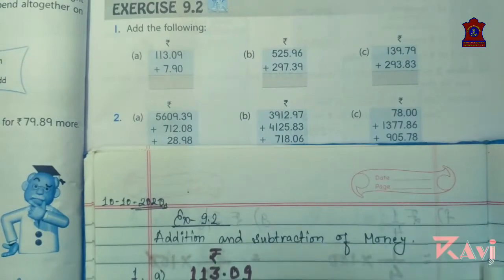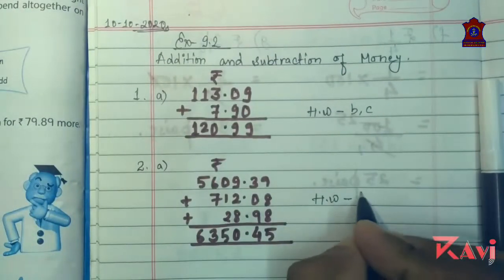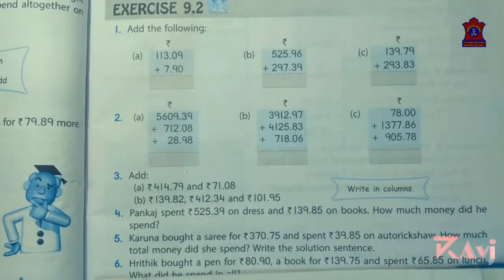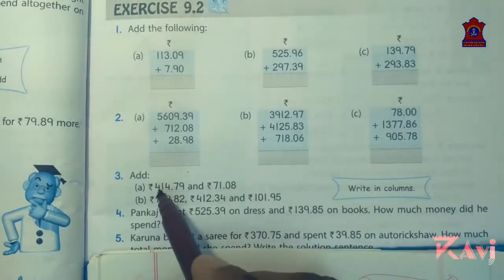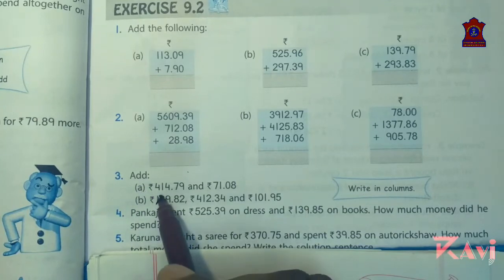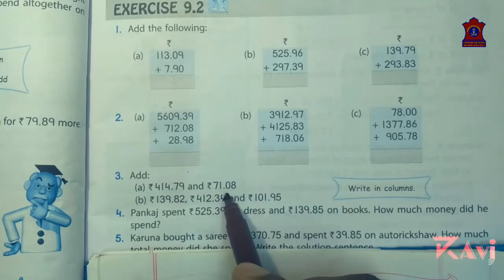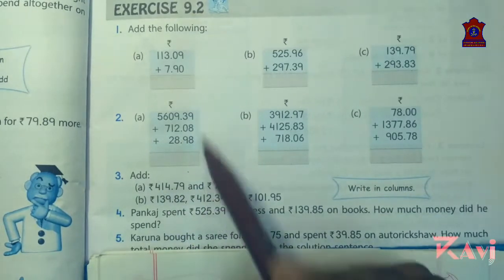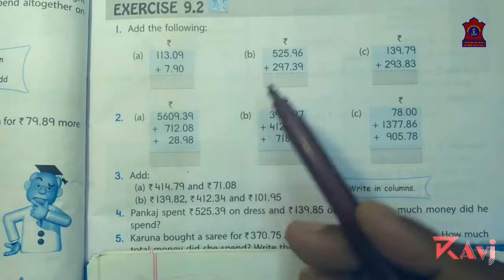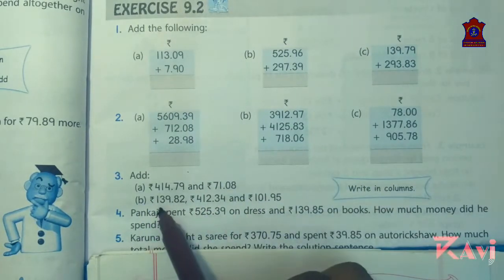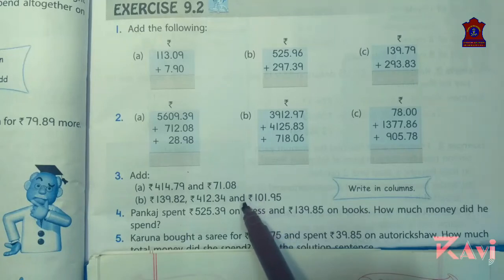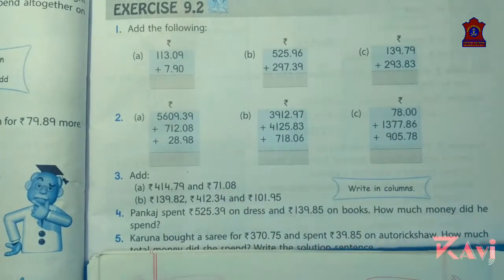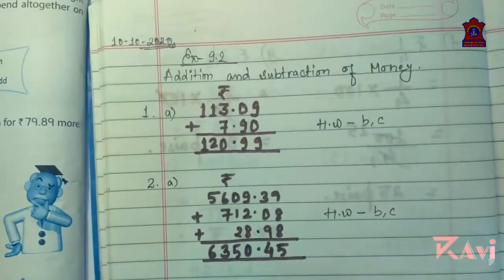Question b and c you will do by yourself. Now look at question number 3: add rupees 414.79 and rupees 71.08. You need to arrange in column and add. Question number b is also the same — three numbers are given; arrange like question number two and add. Do question number 3 by yourself.